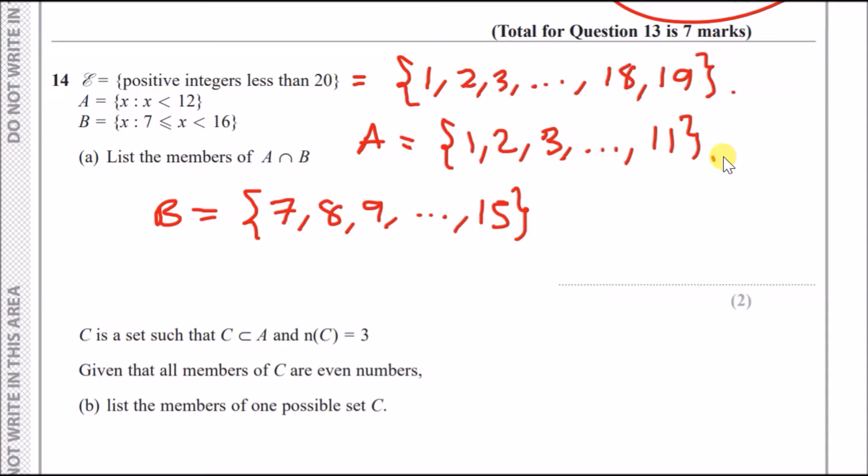Now, part A, it says we need to list the members of A intersecting B. This symbol here means numbers they have in common. Well, if you look at numbers, this goes from 1 to 11, that goes from 7 to 15. The only numbers they have in common is between 7 all the way up to 11. So the answer here would be 7, 8, 9, 10, 11. You don't actually have to use these curly brackets in your exam.